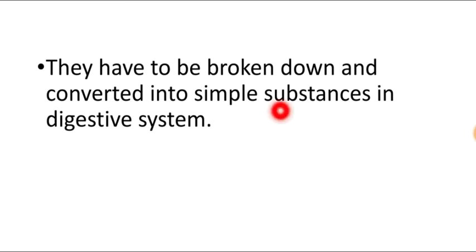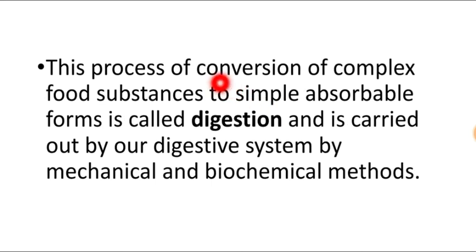They have to be broken down and converted into simple substances in the digestive system. This process of conversion of complex substances to simple absorbable forms is called digestion and is carried out by our digestive system by mechanical and biochemical methods.